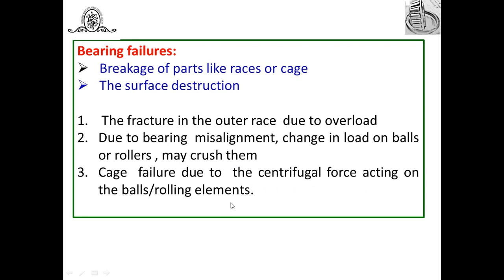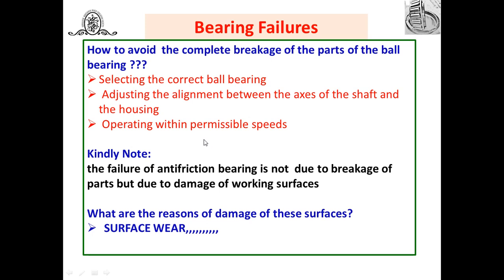These are the reasons for breakage of parts like races and cage in rolling contact bearings. Another failure mode is surface destruction or surface wear. To avoid complete breakage of the parts, we have to select the correct ball bearing or roller contact bearing for the particular application — that means adopting standard procedures to select the proper bearing.